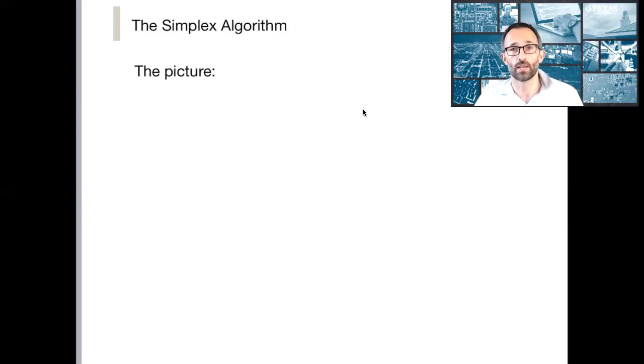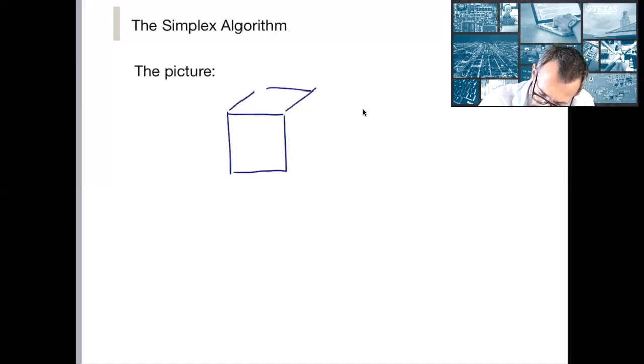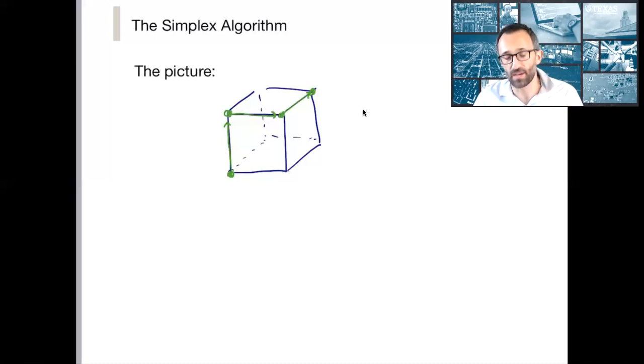And the simplex algorithm says, well, instead of just by brute force enumerating all of the extreme points, maybe we could go from corner point to corner point until we find the optimal one. We know we have the benefit of convexity, and convexity tells us that if none of your immediate, if nobody right around you is more enticing than you, then actually you're at a global optimal solution.